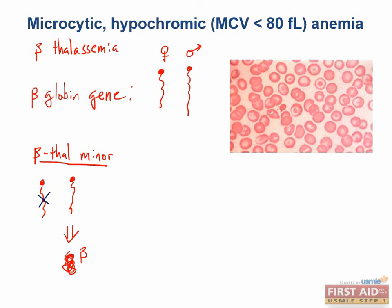Beta-thalassemia minor can be confirmed with hemoglobin electrophoresis by identifying high concentrations of hemoglobin A2, consisting of two alpha and two delta subunits. The upper limit of normal for hemoglobin A2 is 3.5% of total hemoglobin — above this, suspect beta-thalassemia minor. Two mutations of the beta-globin gene — homozygous — is beta-thalassemia major. These patients have no functional beta-globin protein and cannot make hemoglobin A, leading to severe anemia. They use extramedullary erythropoiesis, expanding bone marrow into the skull, producing a crew-cut appearance on x-rays along with chipmunk facies.